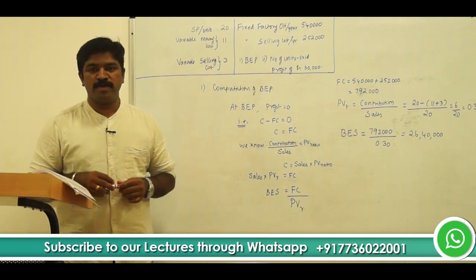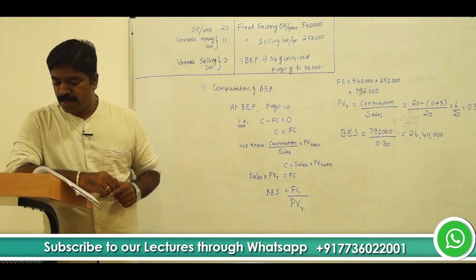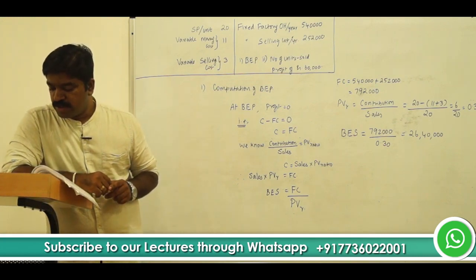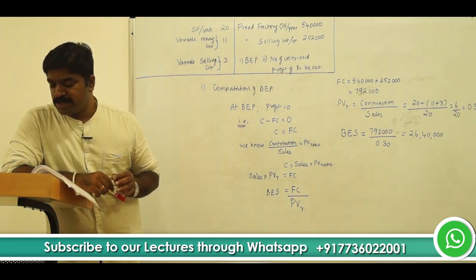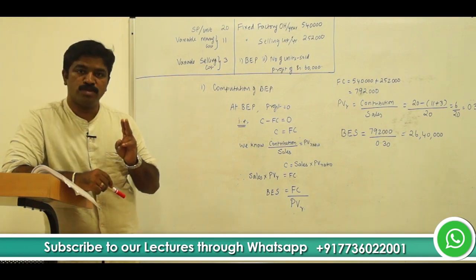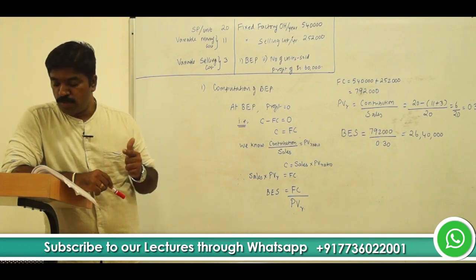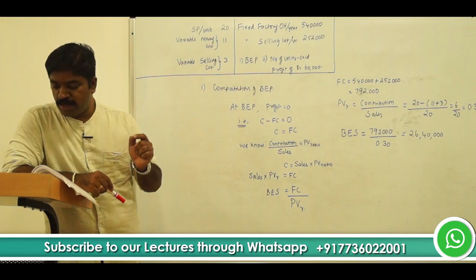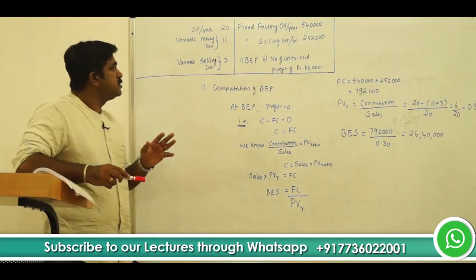This is a case study on break-even point. From the following data, calculate break-even point expressed in terms of sale amount or revenue. Question 2: find the number of units that must be sold to earn a profit of Rs. 60,000. So, two questions: one, compute break-even point; two, find out the number of units to sell to make a profit of 60,000 per year. The available data are as follows.